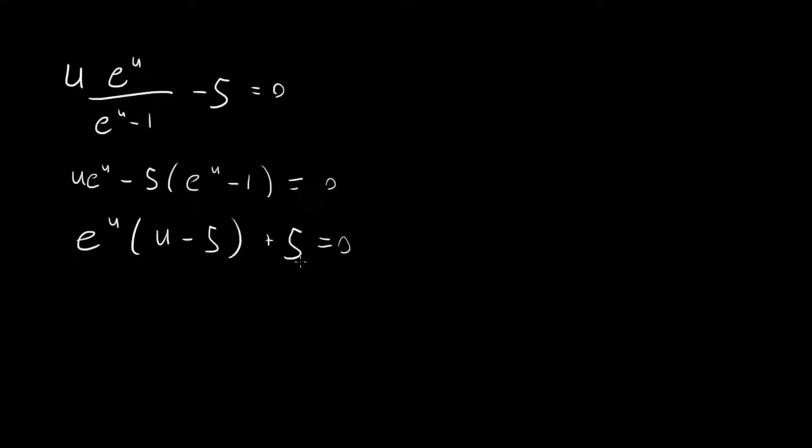And we can rearrange this such that we get e to the u times u minus five plus five equals zero. Now all we have to do is find the value of u for which this is equal to zero. Hopefully you're coming here from my Lambert W video. If not, go watch that because that's the secret on how we solve this equation. This looks like a Lambert W function type thing. If we have y e to the y equal to x, then we can solve for y as Lambert W function of x.